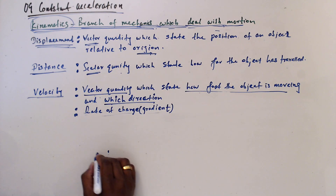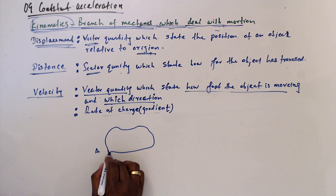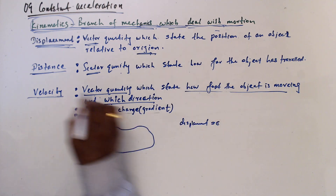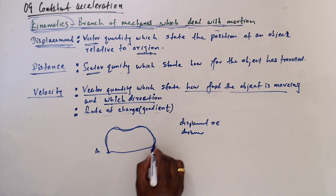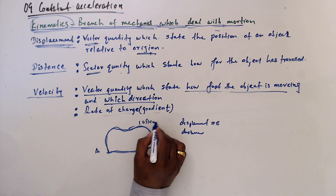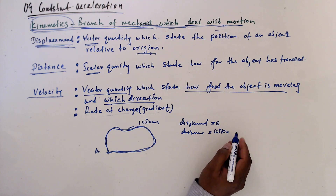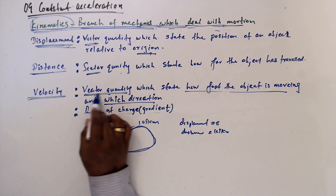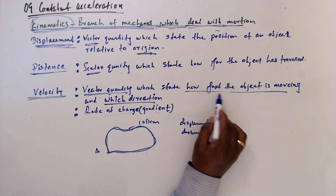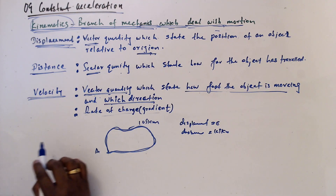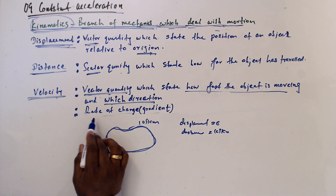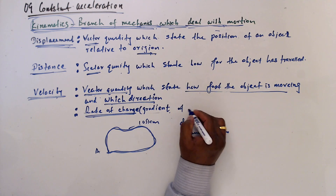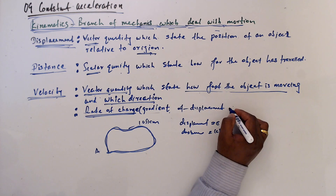For example, assume a person starts from E and then comes back to E again. The displacement is zero, but the distance — the length traveled — is maybe 105 kilometers. Velocity is a vector quantity with both direction and magnitude, which states how fast the object is moving and in which direction. Velocity is the rate of change, so it is the gradient of the displacement-time graph.